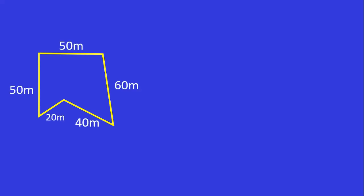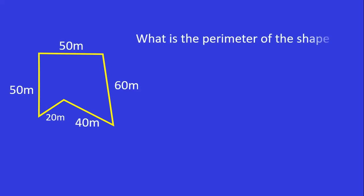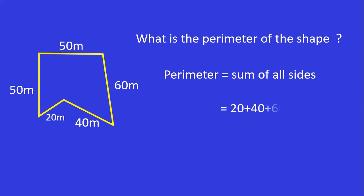Let us take another field here. The shape of the field is given and the measurements of the sides are: 20, 40, 60, 50, 50, and 50. Perimeter equals the sum of all the lengths of sides. Hence, 20 plus 40 plus 60 plus 50 plus 50 plus 50, the answer is 220 meters.